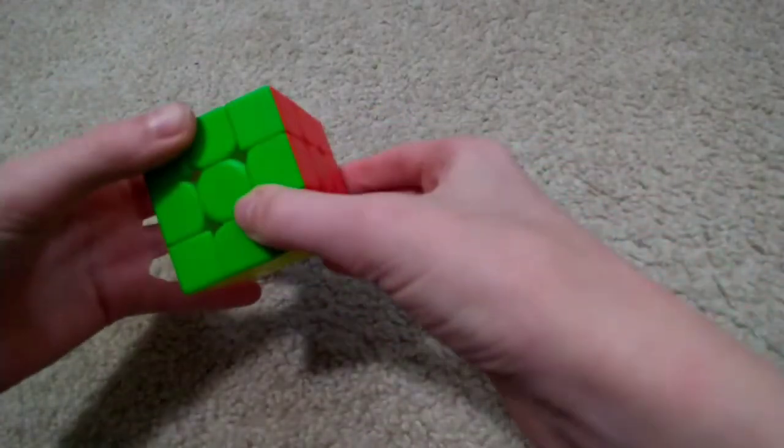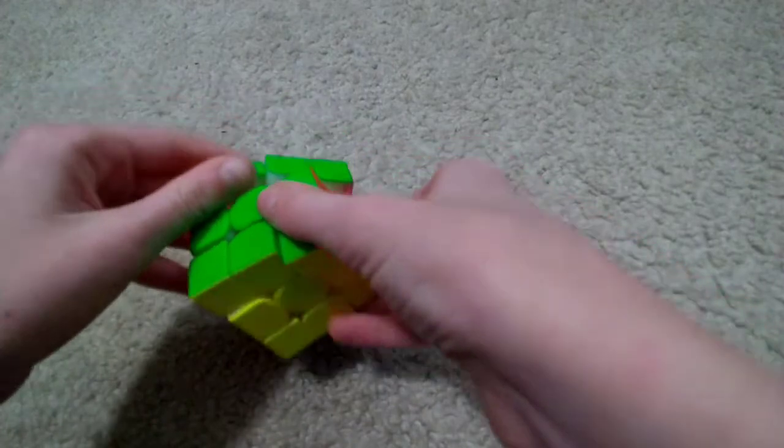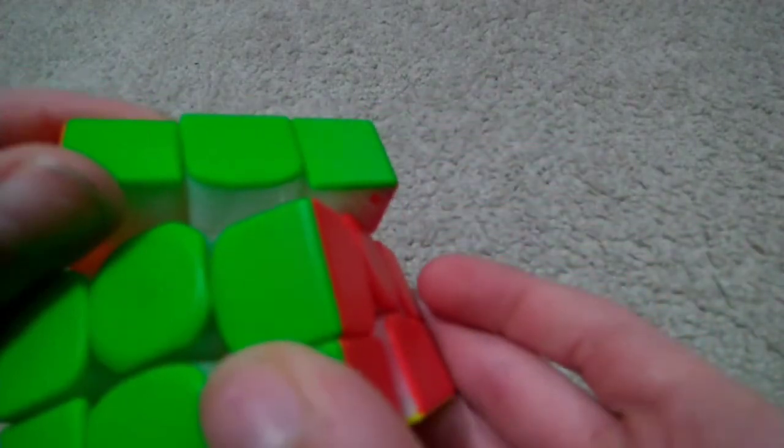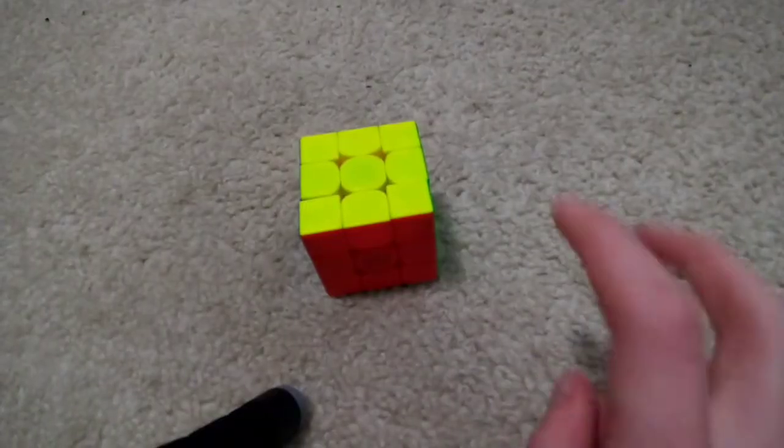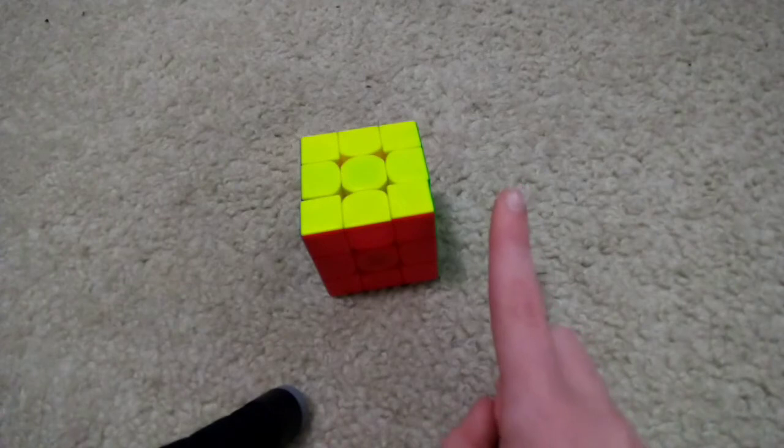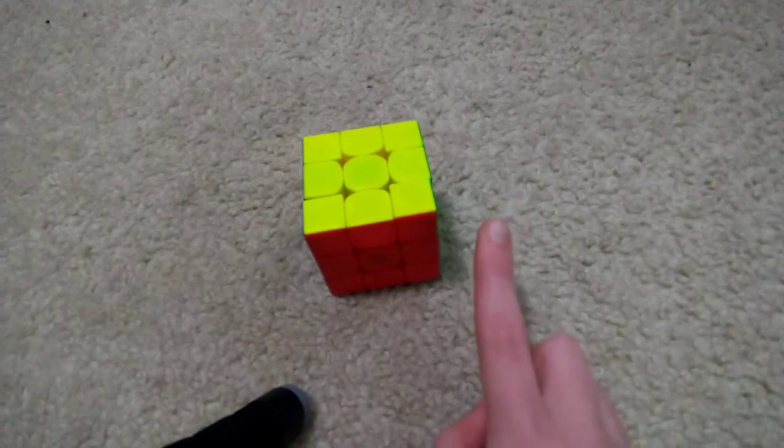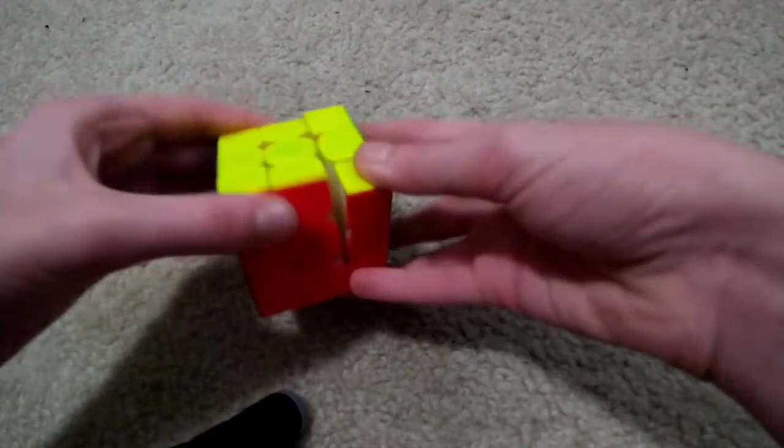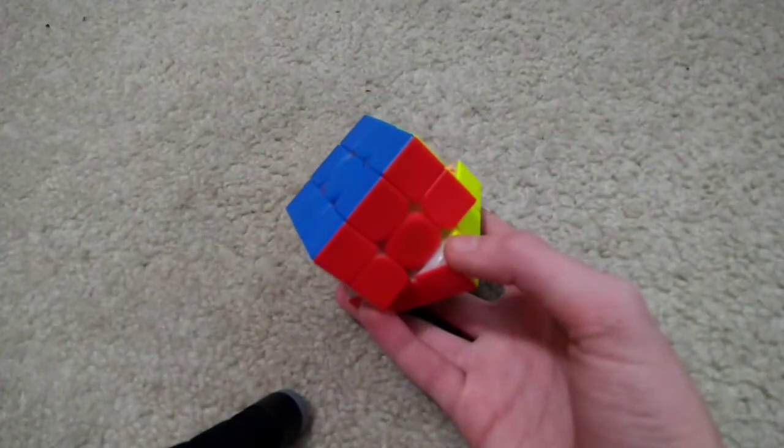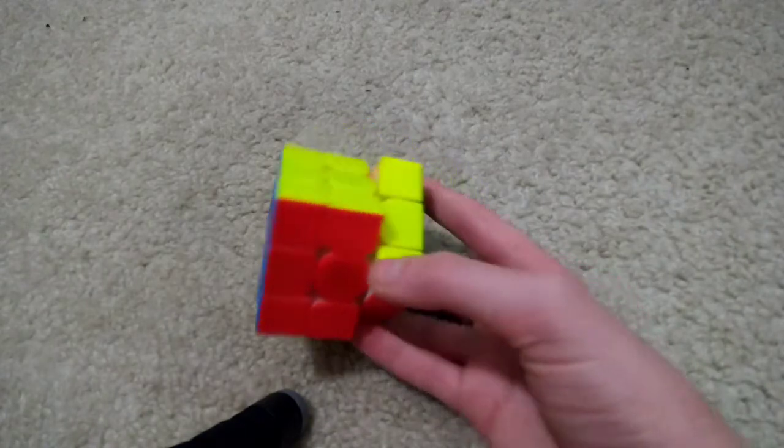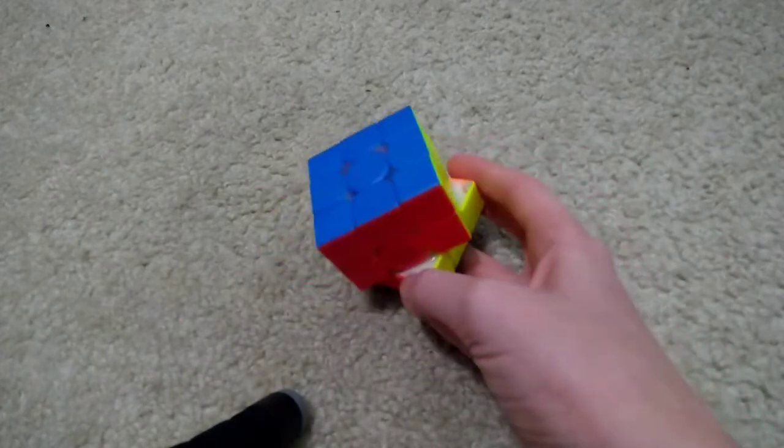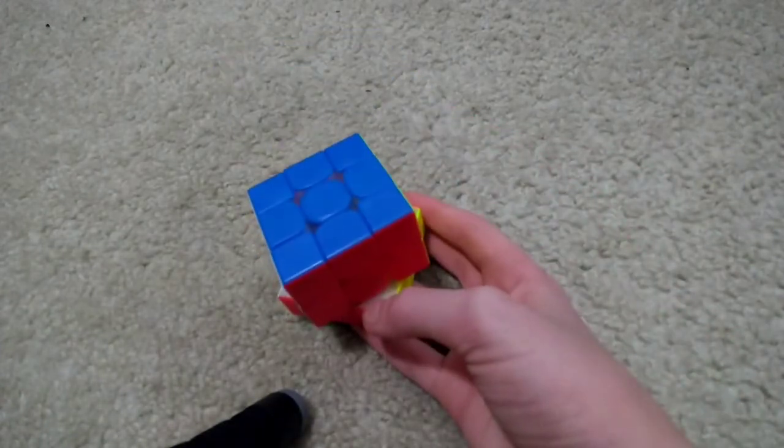One thing that impacts the performance greatly is these hexagon honeycomb patterns inside the cube. The honeycomb pattern does two things: First, it improves smoothness by reducing friction. Second, it helps trap lube, which makes any lube you put in the edge tracks or corner stocks last way longer than on other cubes.